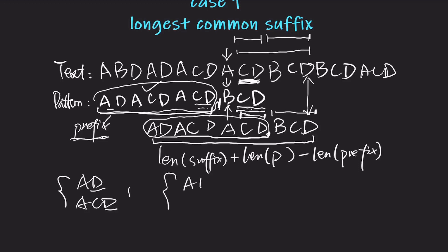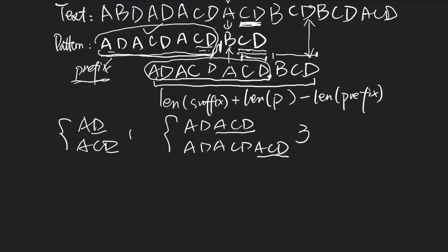We have AD, ACD. And AD, ACD, ACD — then the longest common surface is ACD, length 3. We can try every possible prefix of the pattern string.